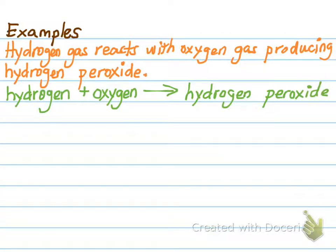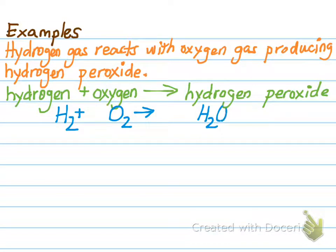'Reacts with' becomes a plus. Oxygen gas — oxygen is a reactant. 'Producing' is my arrow, and hydrogen peroxide is my product. So my word equation is: hydrogen + oxygen → hydrogen peroxide. Now I'm going to make my skeleton equation. Hydrogen and oxygen are both diatomic molecules, so I write them as H2 and O2. Hydrogen peroxide is H2O2. I leave space in front of each for a coefficient. I have two hydrogens on my reactant side and two on my product side. Two oxygens and two oxygens. This skeleton equation is already balanced — I don't need any coefficients.